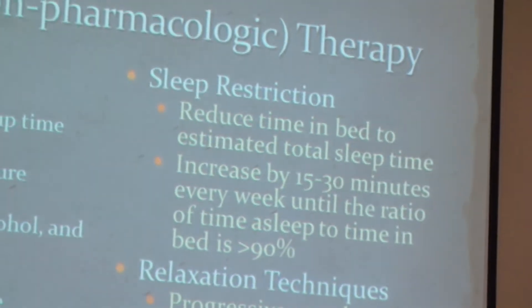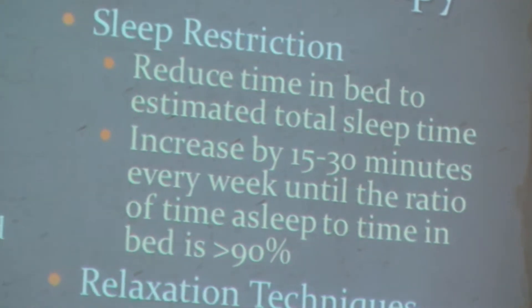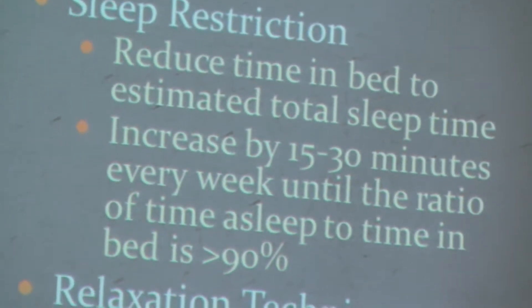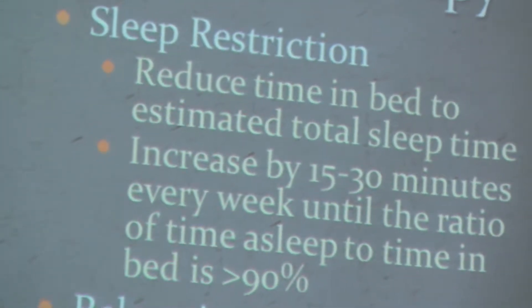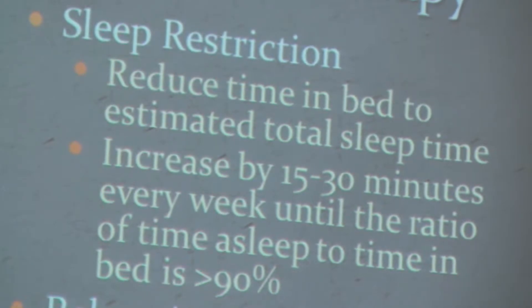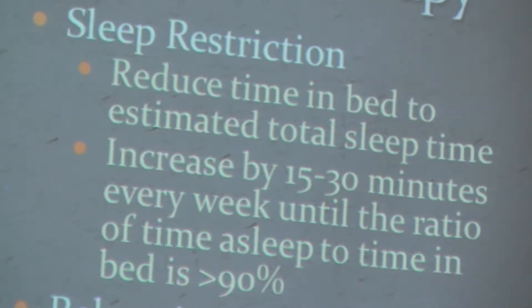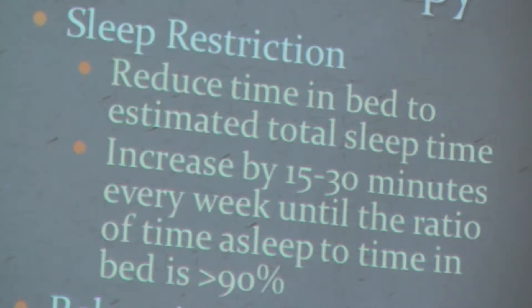Sleep restriction is another technique — you reduce total time in bed so that when you're in bed, you're sleeping. Set a limit, say five hours in bed; if you're not asleep, get up and walk around until you're more tired. The goal is a ratio of time in bed to time asleep greater than 90%. Then have the patient incrementally increase by 15 to 30 minutes every week or so.